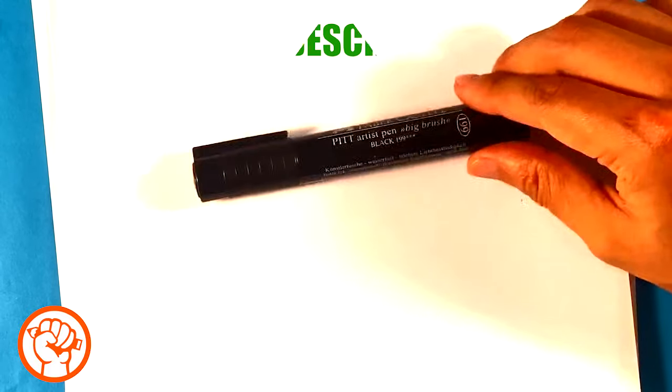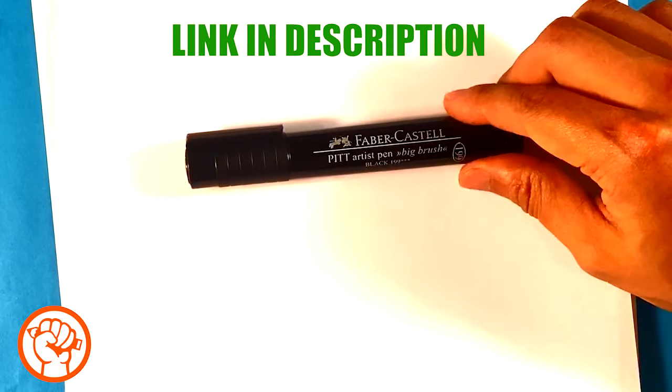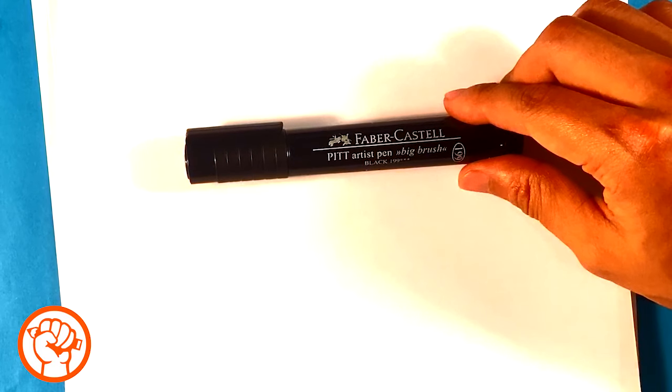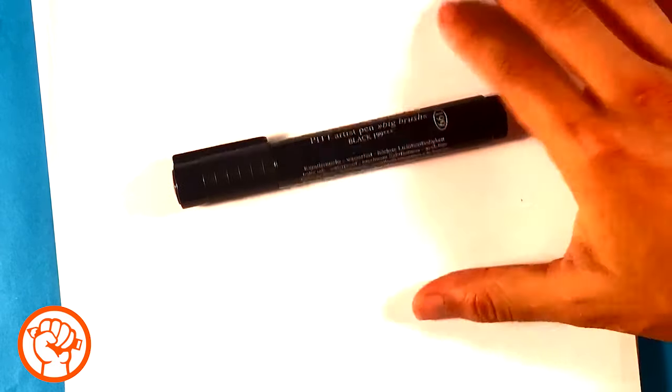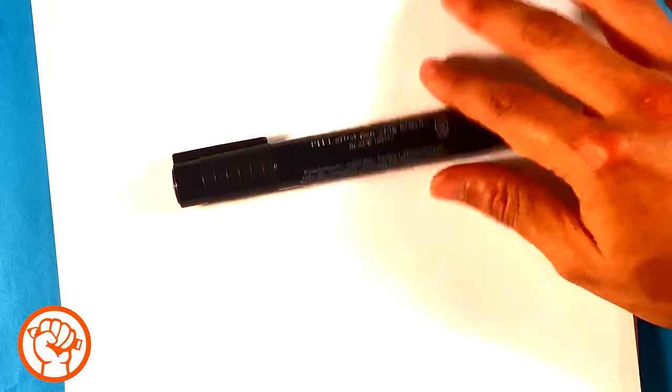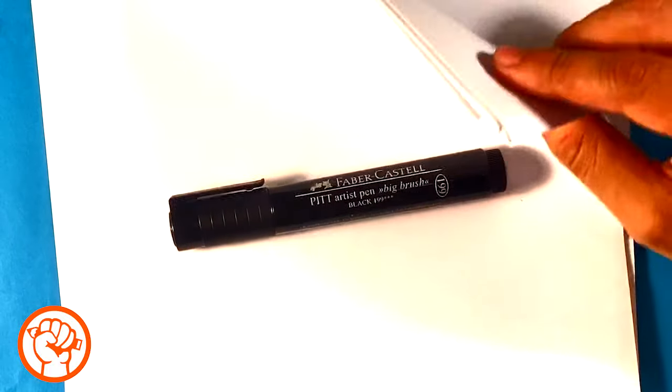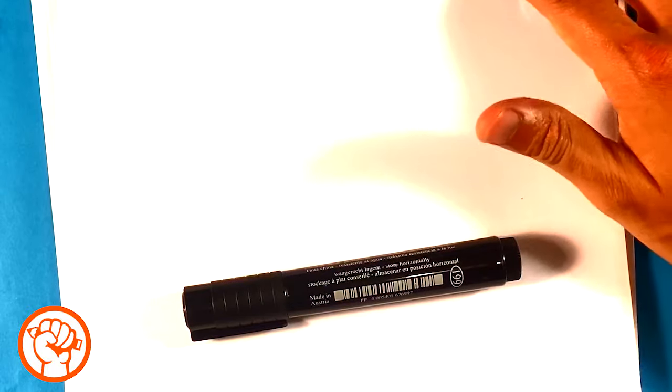In terms of what to use, I'm going to be using this marker. This is a Faber-Castell PITT Artist Pen Big Brush. I'm going to put a link to that in the description so you can go buy it on Amazon if you want, but you don't have to. You can use any marker you want. Also, this paper is computer printing paper. So that's all I'm going to use. That is it. If you're ready, let's get started.